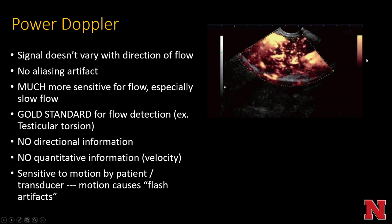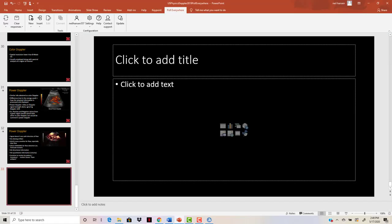A flash artifact occurs during power Doppler when the entire sampled area becomes uniformly orange, rendering it useless — so power Doppler is very prone to this artifact. That covers the Doppler section. Thank you for your participation and viewing this video.